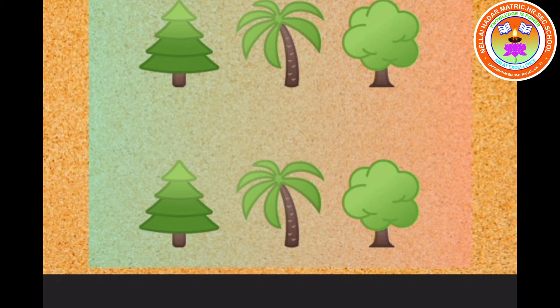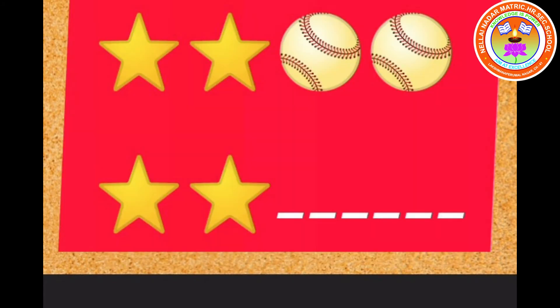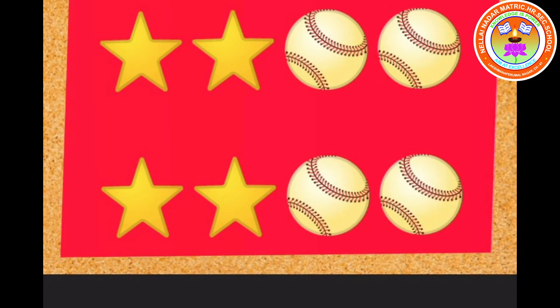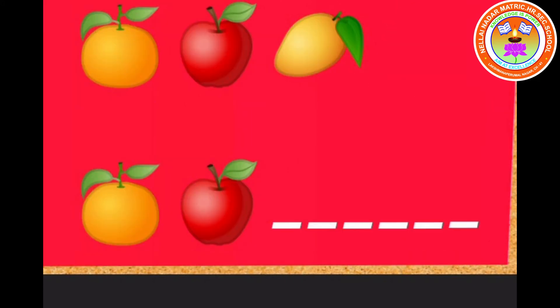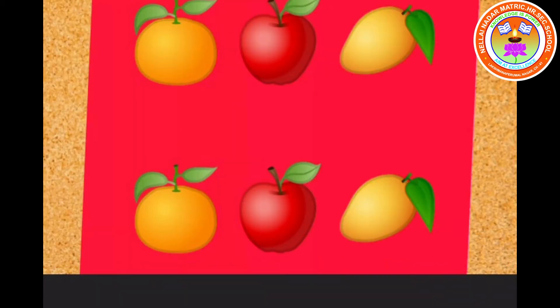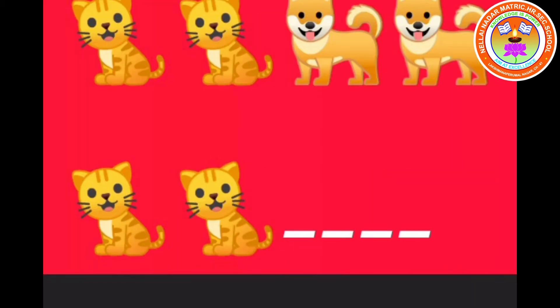Next example: two stars, two balls, two stars — so what is the next pattern? Two balls! And then next example: orange, apple, mango, orange, apple — so what will come next? Mango! Very good, children.